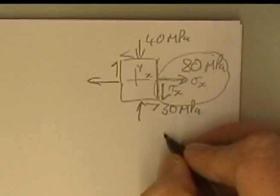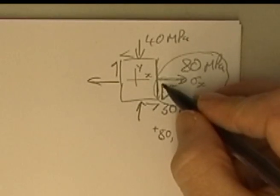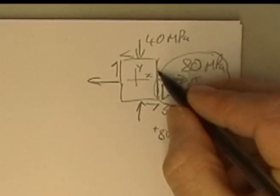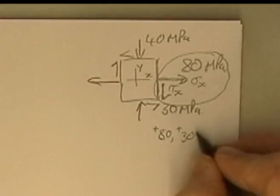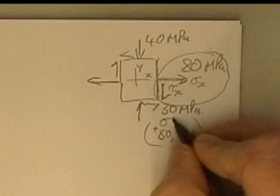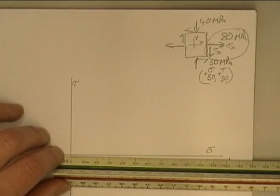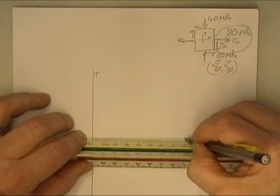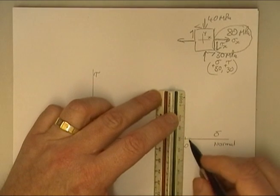The x point has coordinates of positive 80. My shear is trying to turn the element clockwise, so this is a positive 30 shear. Those are the coordinates for that point — tensile and shear. On my graph, come along to 80 and positive shear, so we go up 30.